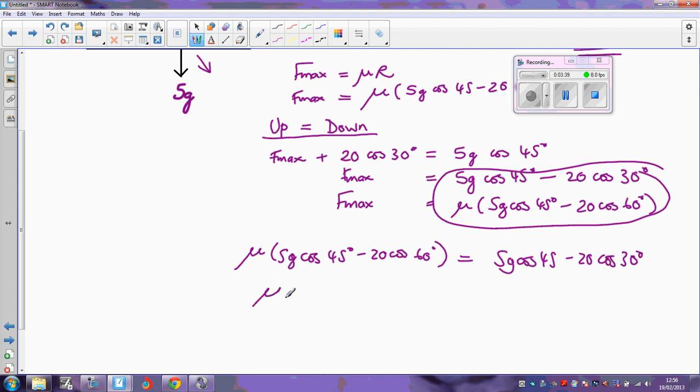So all I need to do to find mu is do this one divided by this one, and it comes out as 0.703 to three significant figures. Thank you.